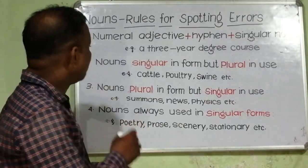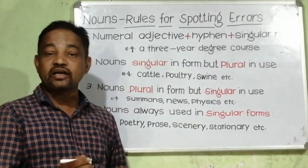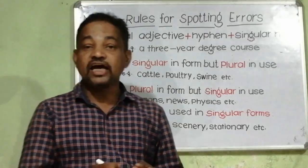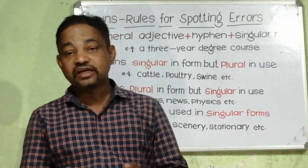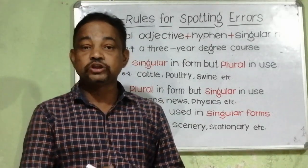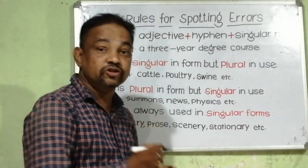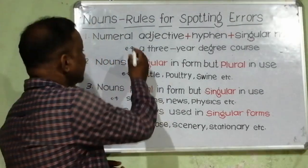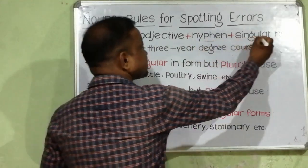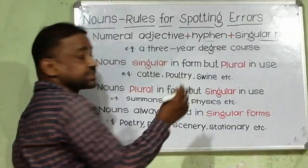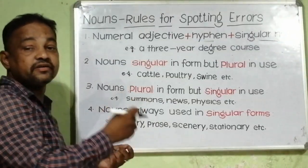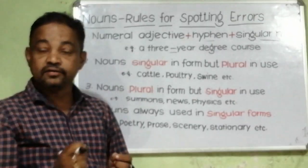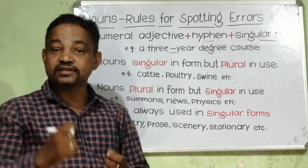Rule number one: numeral adjective plus hyphen plus singular noun. A numeral adjective refers to the natural numbers one, two, three, four that are used to qualify your noun. Here I am talking about the definite numeral adjective. When the numeral adjective is used with a hyphen, it must follow a singular noun. For example, a three-year degree course. Here we are using a hyphen, but you cannot say a three-hyphen-years degree course.